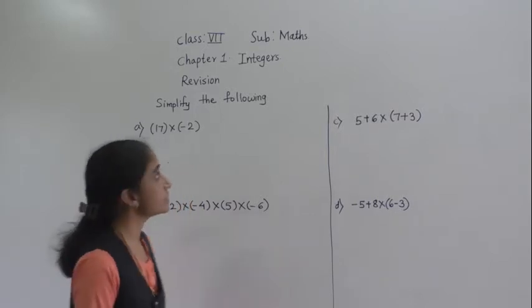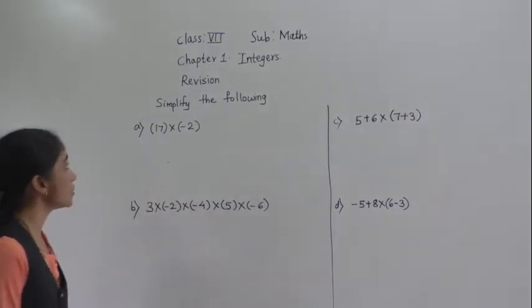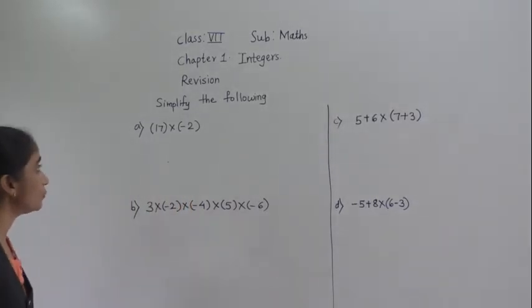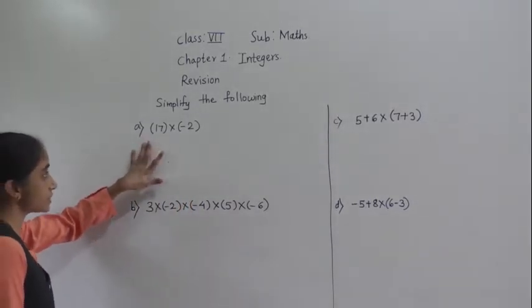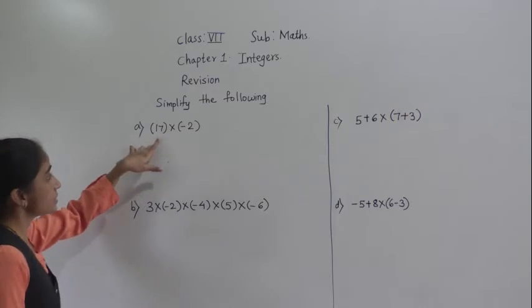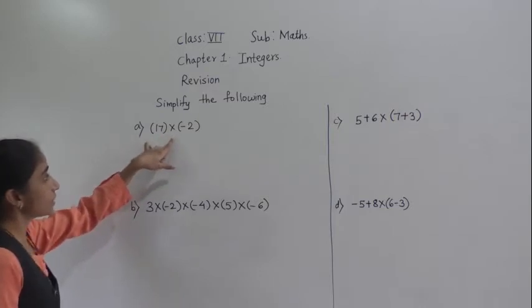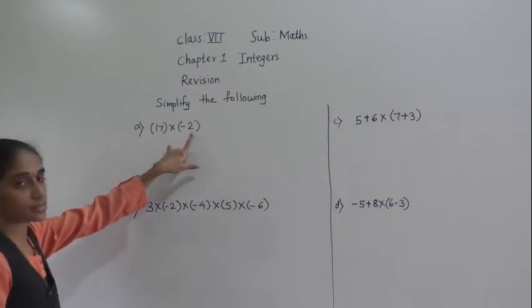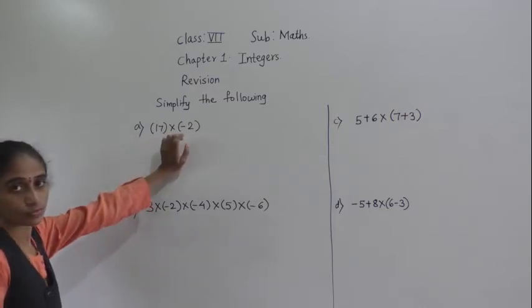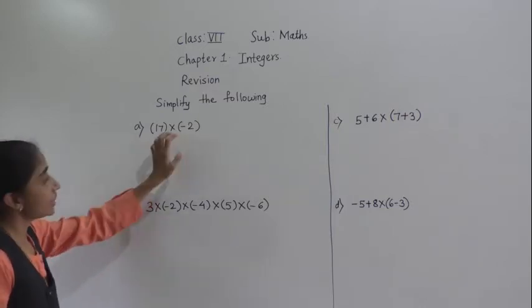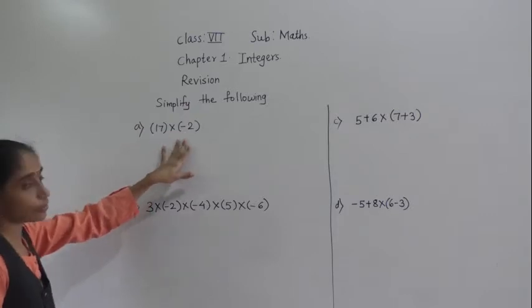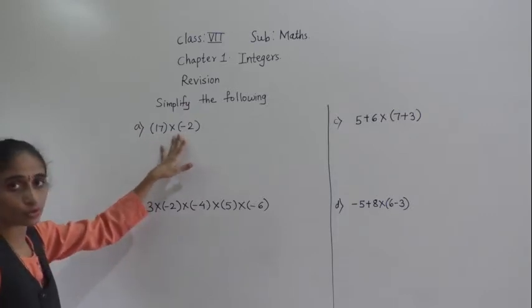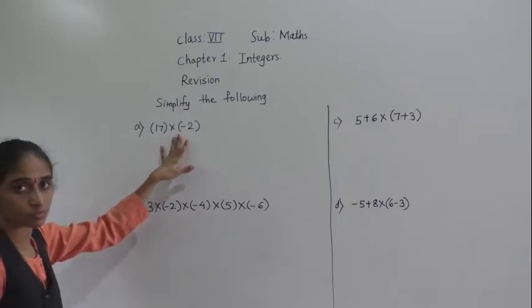Good morning students, let's solve now — simplify the following. In this first example, 17 multiplied by minus 2. Now if you will see, here we have to find the product of these both the numbers.